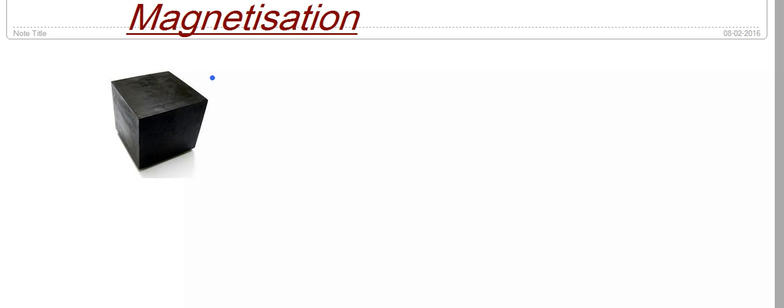Now consider a specimen like this. It will have a magnetic moment due to the orbital and spin motions of its electrons. If I consider some unit volume of this material and calculate the magnetic moment for its unit volume, that's what gives me the magnetization.